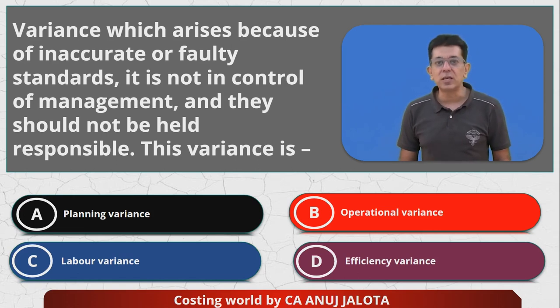I don't think C or D makes any sense because these are only names of the variances. Among the first two, first of all you should be knowing what do you mean by planning variances, what do you mean by operational variances.